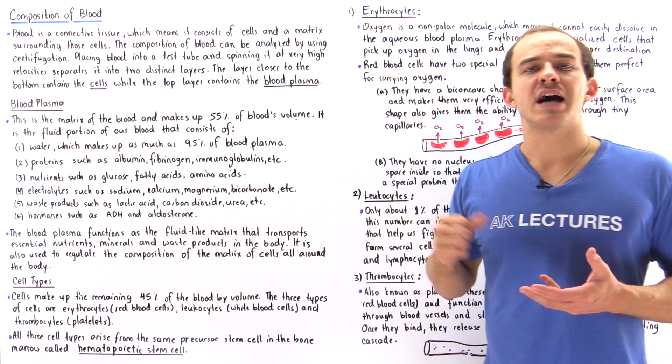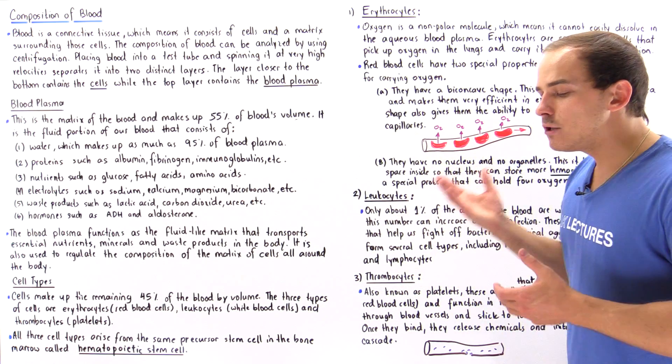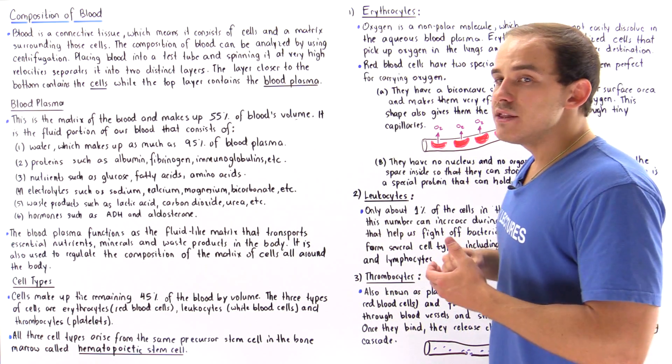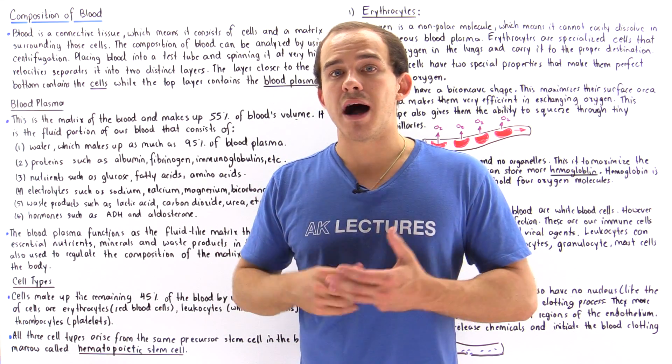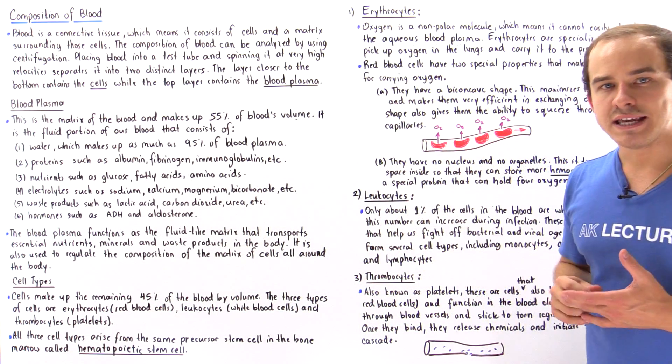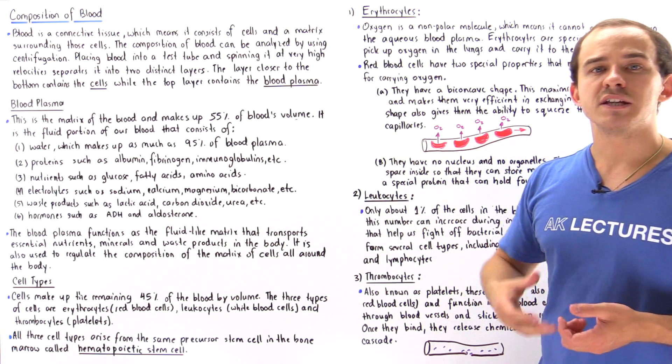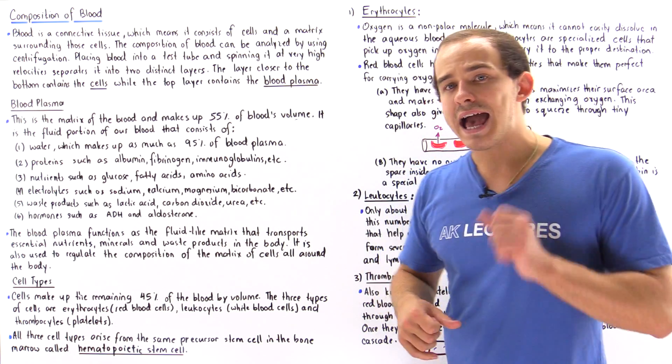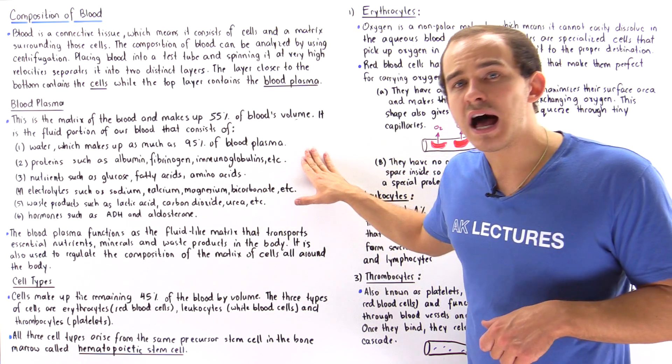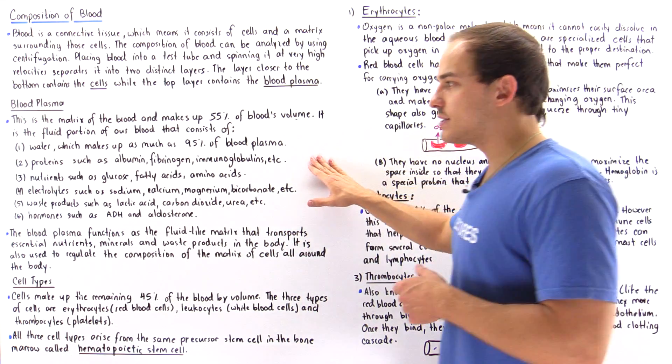Number two, we also find different types of proteins such as, for example, albumin. Albumin is the protein that carries fatty acids and cholesterol molecules inside the blood plasma. We also have proteins such as our fibrinogen which is basically involved in a blood clotting process and we have immunoglobulins which are the antibodies that are used by our immune system.